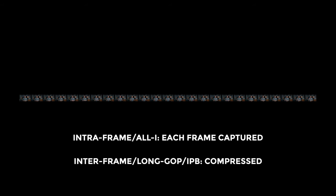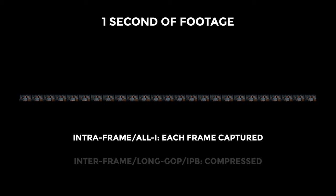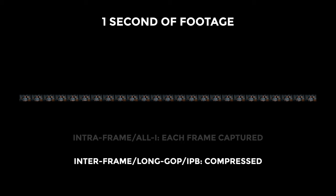There are a couple of main types of codecs: there's intraframe, or all-I, and interframe, or long GOP — also known as long group of pictures. This represents one second of footage. An all-I codec captures all the information from each frame, making it a more bulky format with bigger file sizes. More commonly you'll find long GOP codecs in cameras.